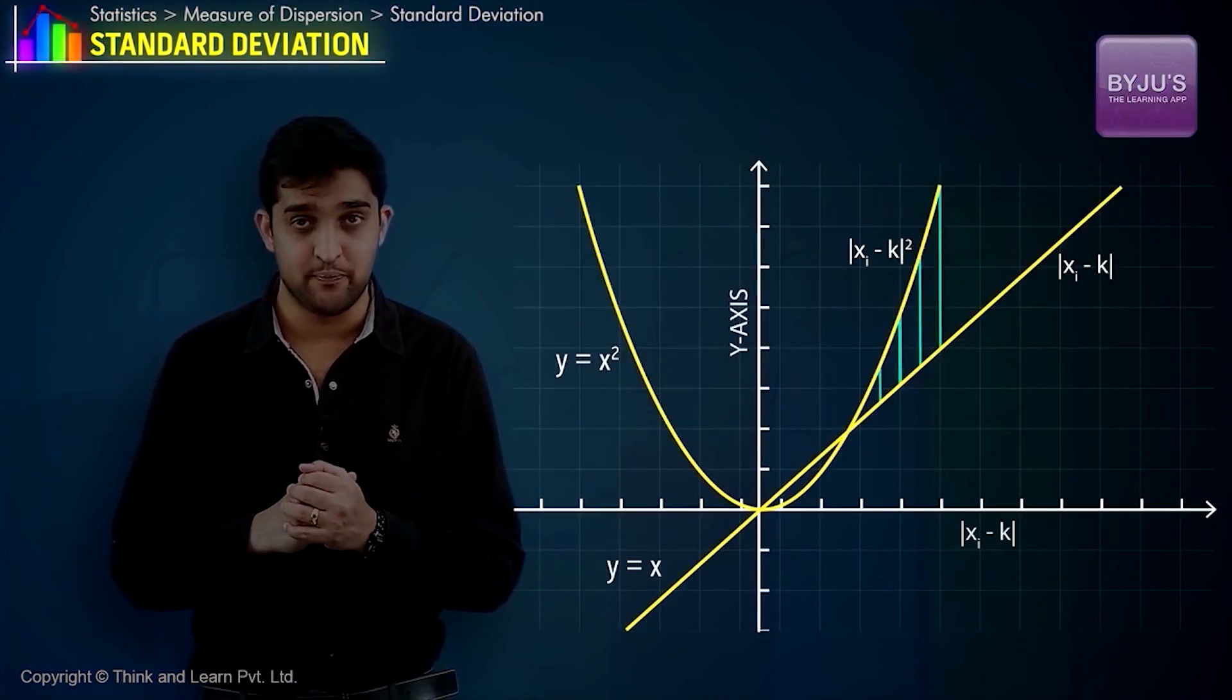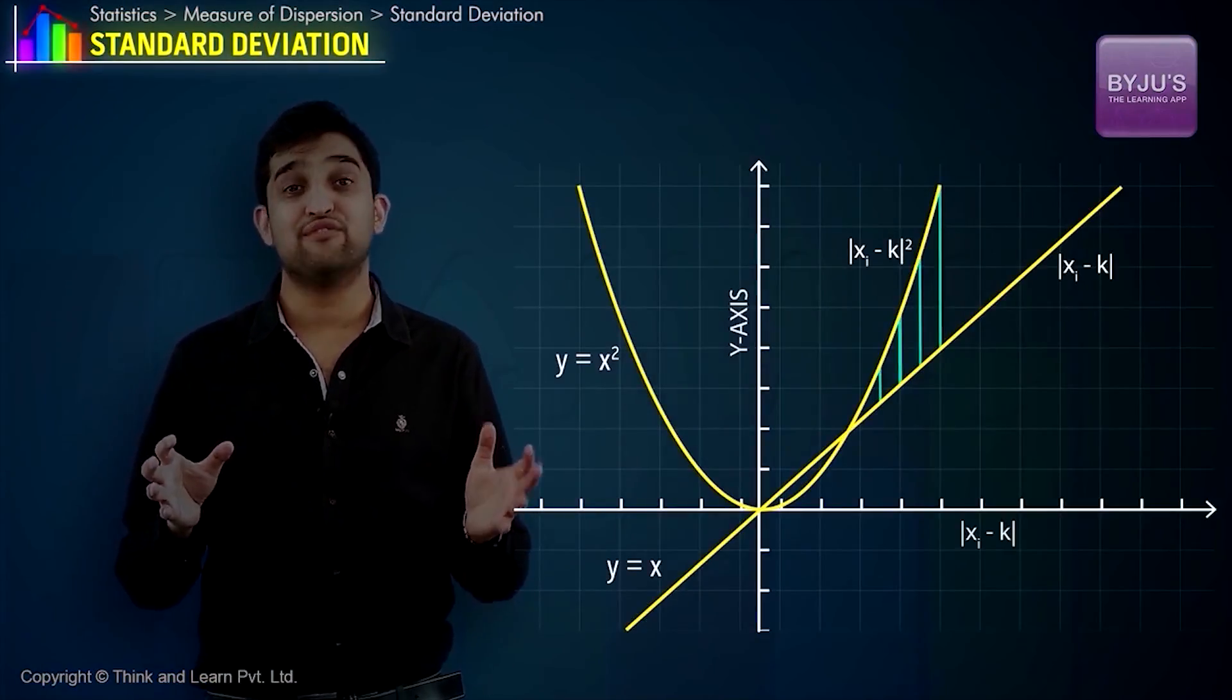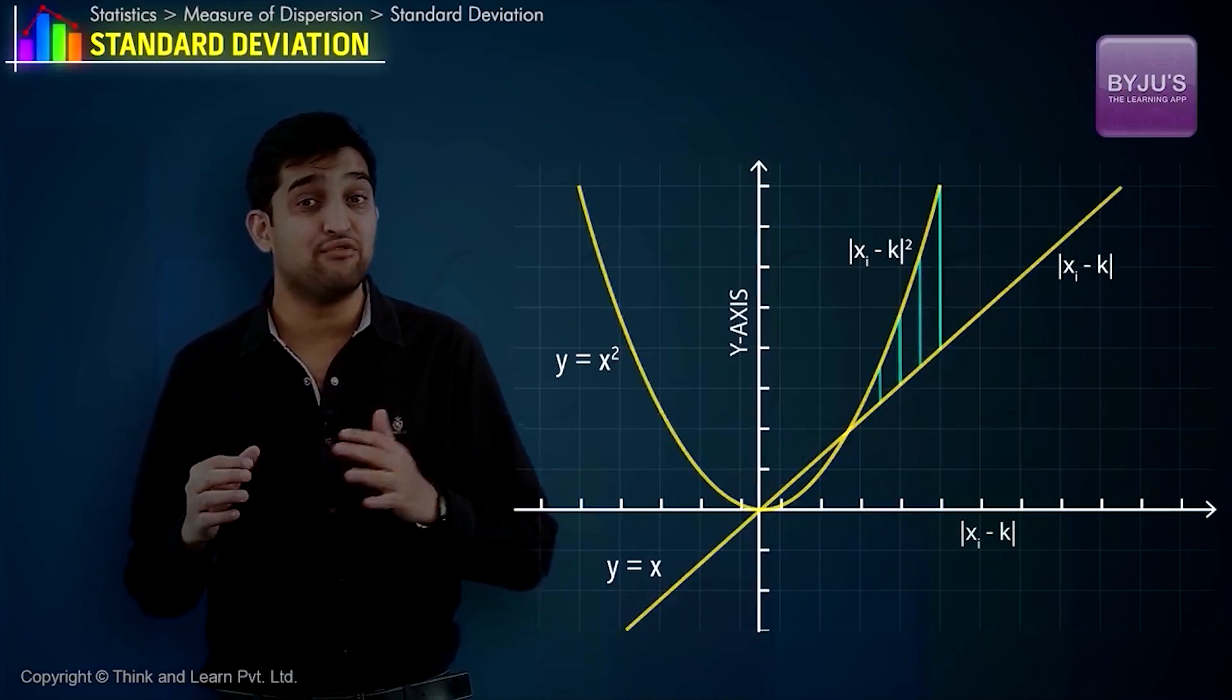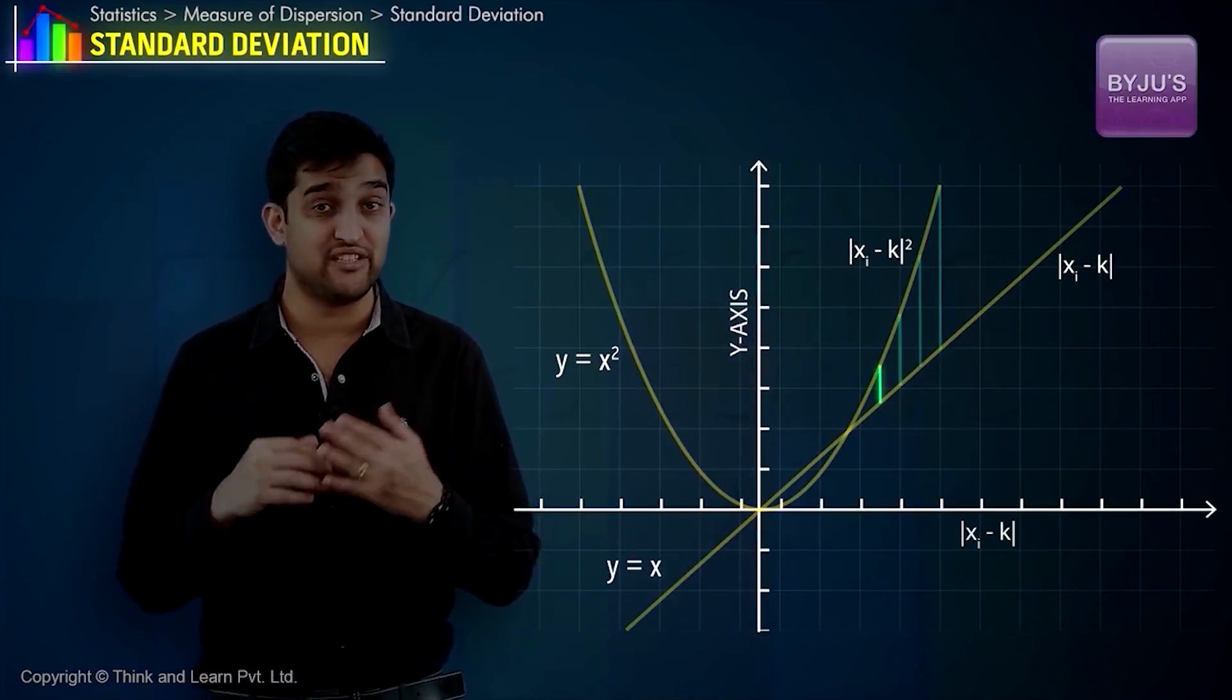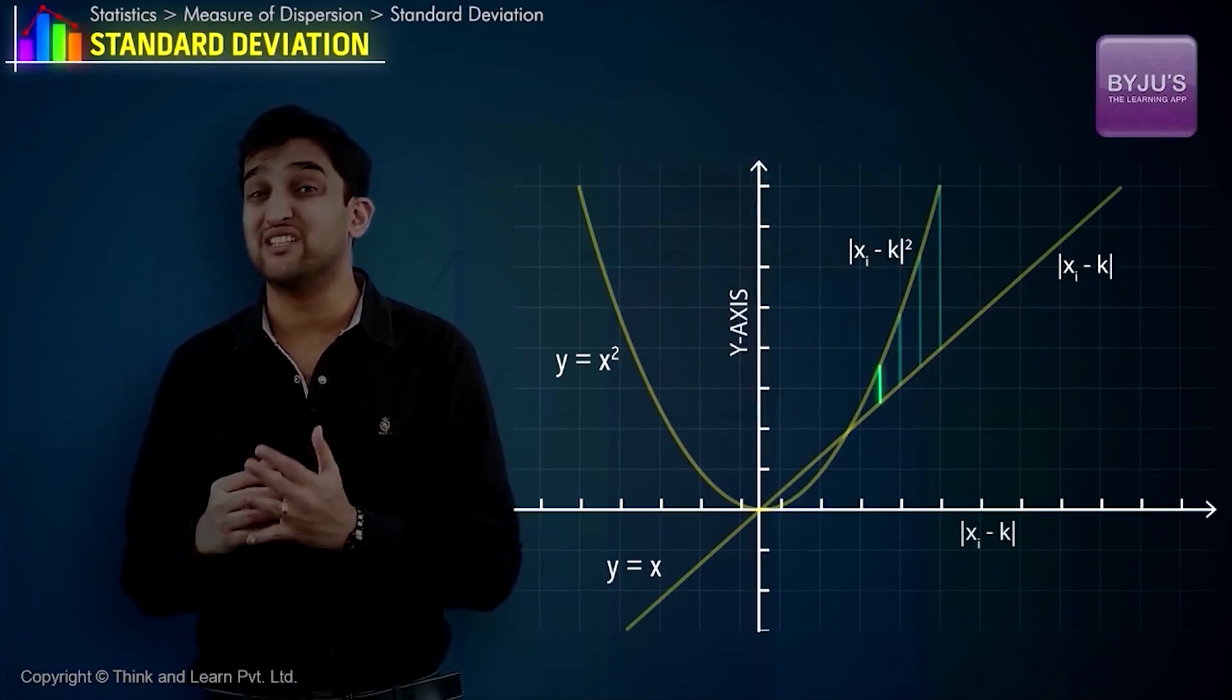One trick to realize this is to take the square of the deviations. This ensures that deviations farther from the central tendency will be weighted more compared to deviations closer to the central tendency.